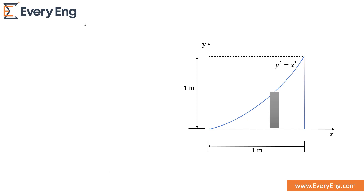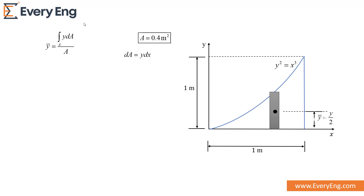Similarly, we can calculate the centroid from the x-axis. The centroid equation from the x-axis is set up using the total area of 0.4 m² and the elemental area y·dx. The centroid of the rectangular section from the x-axis is y/2. Using the equation y² = x³, we can get the value of y².